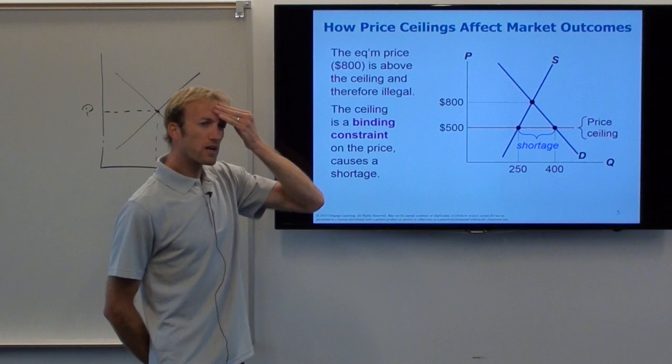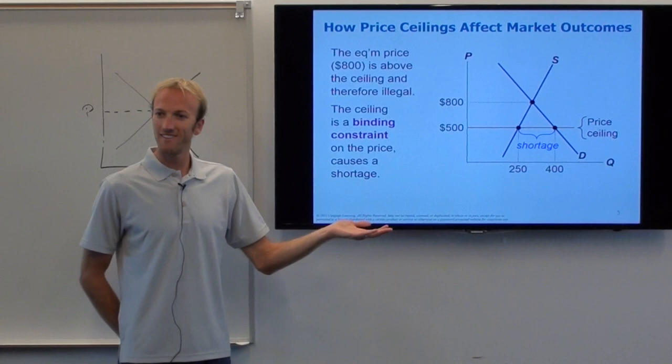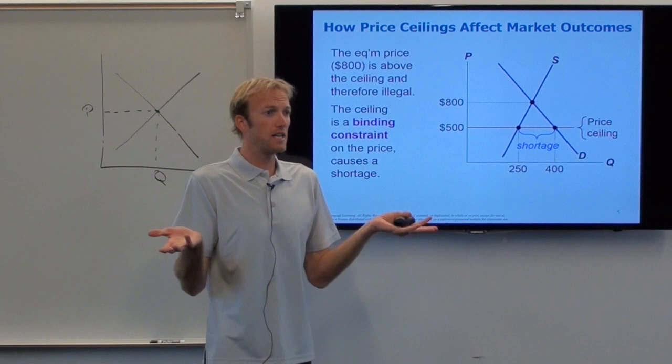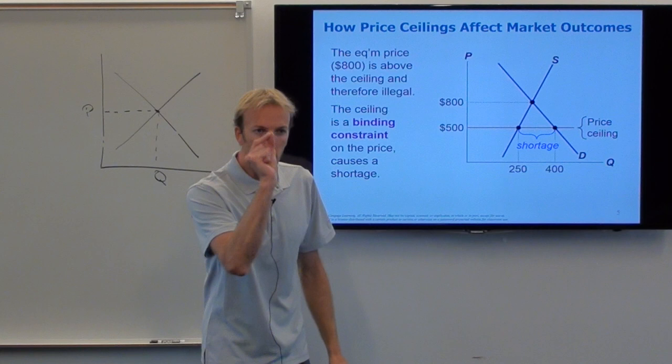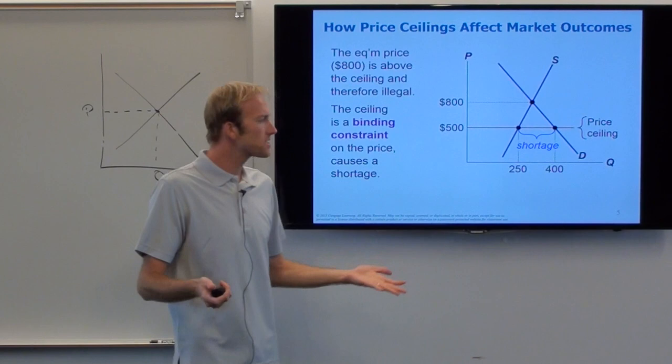Take a step back: why did the government impose this price ceiling in the first place? Was it to screw up the marketplace? Probably not. What are they trying to do here? Make living more affordable. Prices were going up, so somebody had the bright idea to make it illegal to have high prices on homes. They did it with the intention of improving living conditions, but the first thing they actually did was make a shortage. Does everybody understand how the shortage happens? It's pretty intuitive.